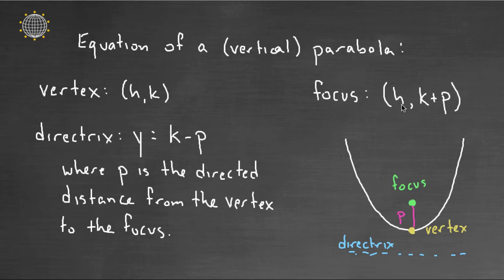So the focus would be the same X coordinate as the vertex, because notice you're not moving left and right for the focus. But the Y value for the focus is higher in my picture than the vertex. So it's K plus P. All right so you've altered the Y component.